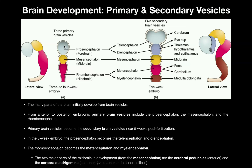Just like you should know anterior to posterior in the primary brain vesicles, you should also know anterior to posterior in the secondary brain vesicles. A helpful tip: if you notice, each one ends in 'encephalon' — telencephalon, diencephalon, and so on. If you just remember they all end in 'encephalon' and memorize the prefixes — tel, di, mes, met, myel — that can also help you.